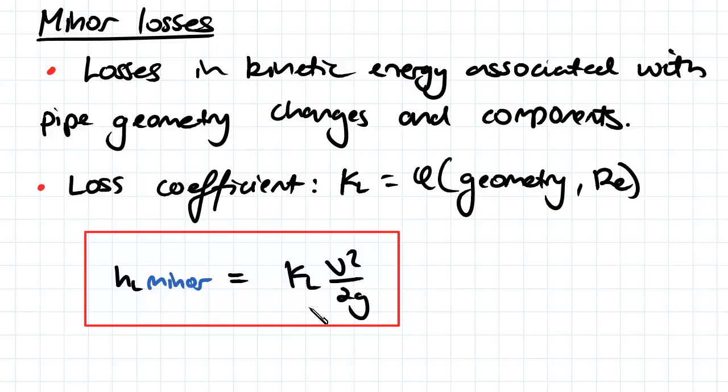So this is the formula that we use, and for different scenarios, we have different values of KL, which we sub into this formula here. It's always got to do with that velocity there.